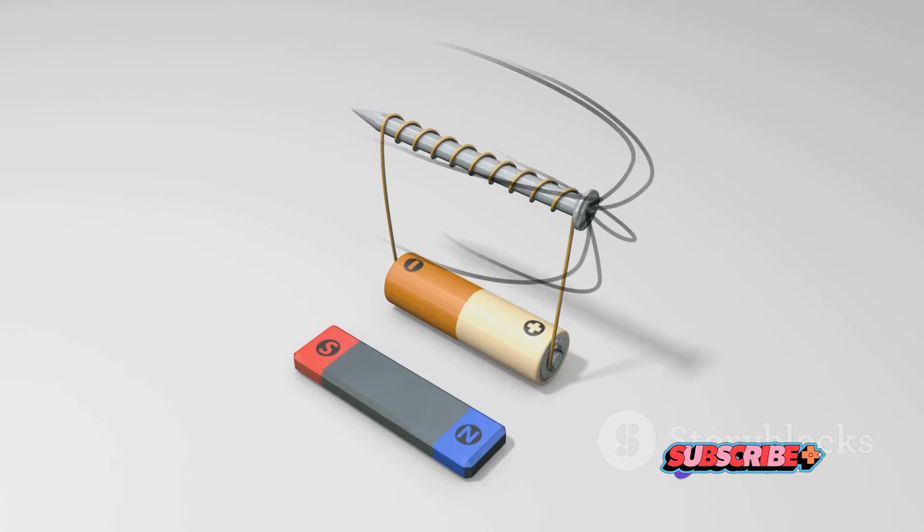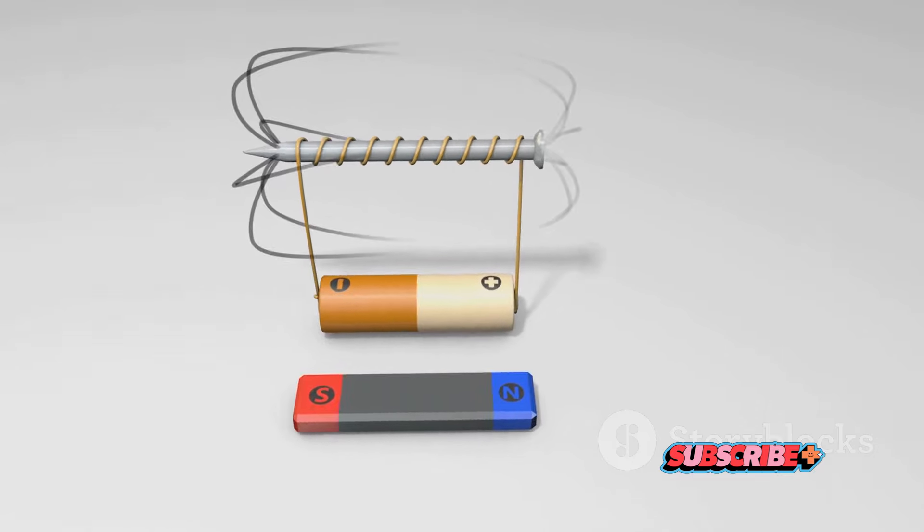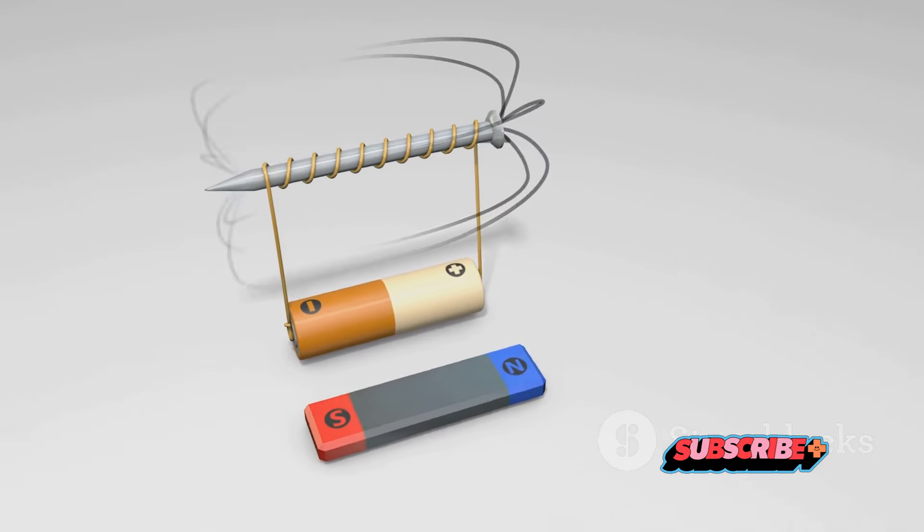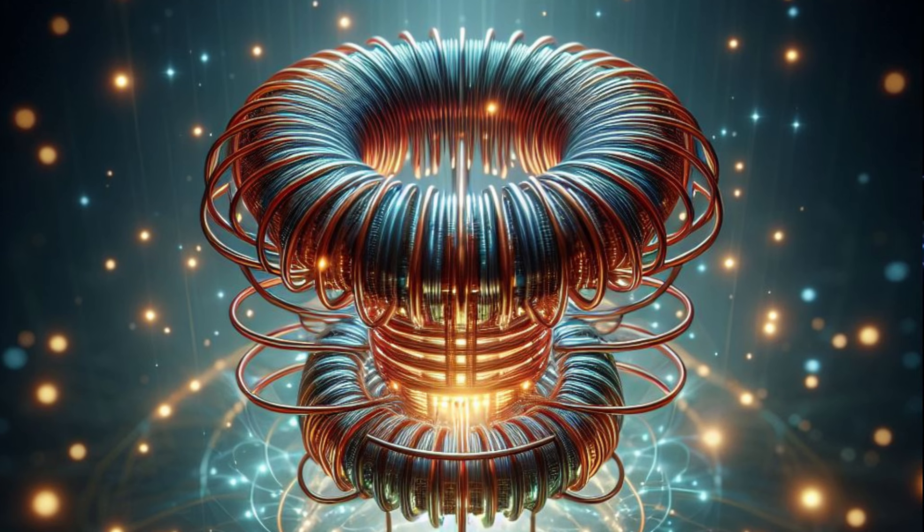Let's break this down. A coil, or inductor, is essentially a conductor, usually a wire, wound into a coil. When an electrical current passes through the coil, it creates a magnetic field around it. What's fascinating is that this magnetic field isn't just static, it's dynamic. As the current changes, the magnetic field changes too, and this flux can induce a voltage. This ability to create a magnetic field and induce a voltage is harnessed in a multitude of ways in electrical engineering.